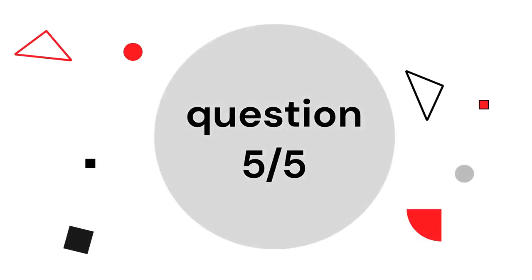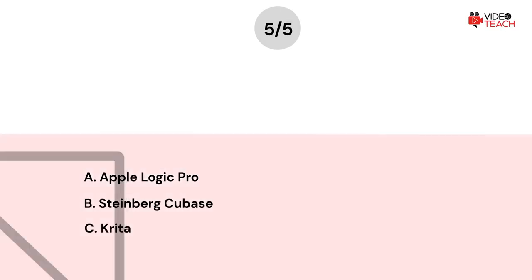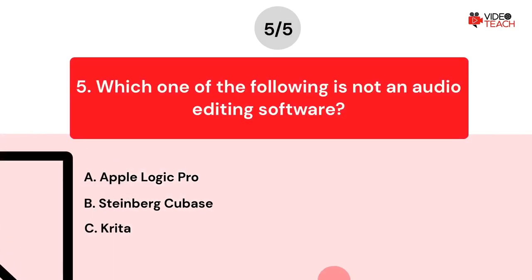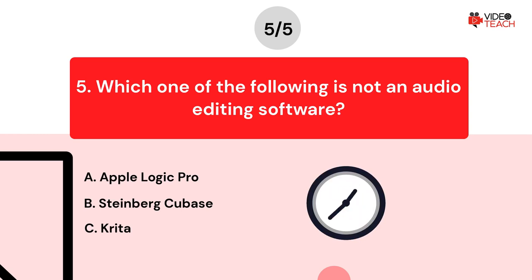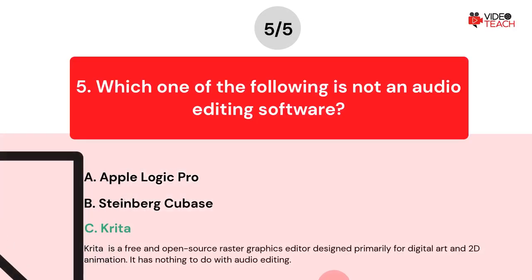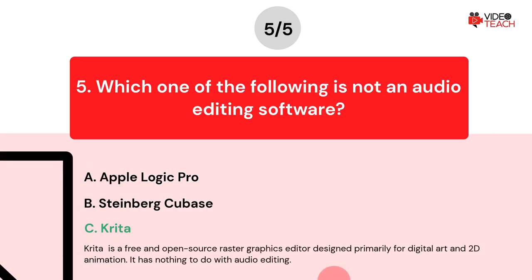Question number five. Which one of the following is not an audio editing software? Option A: Apple Logic Pro. Option B: Steinberg Cubase. Option C: Krita. Now you have about 15 seconds to think about your answer. The correct answer is Option C. Krita is a free and open source raster graphics editor designed primarily for digital art and 2D animation. It has nothing to do with audio editing.